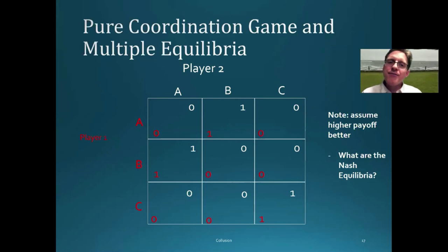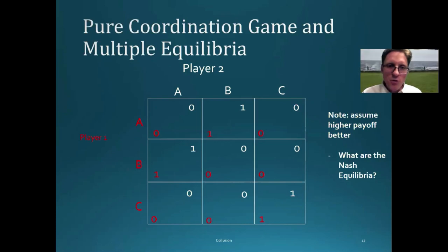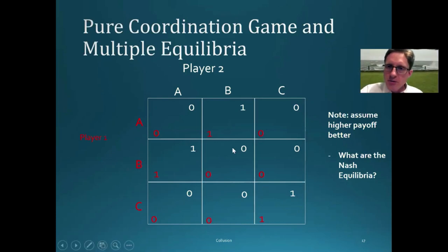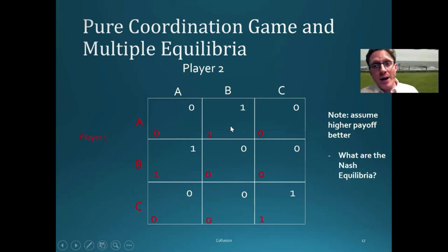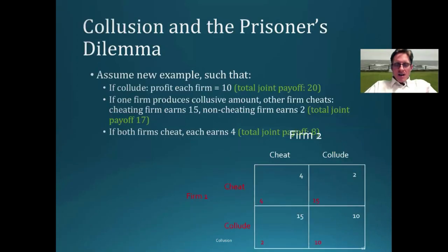This is actually very important for advanced economics work, such as graduate-level PhD programs. The point is that there can be multiple possible Nash equilibria, and we don't know which of those would actually result.